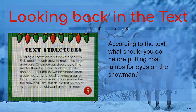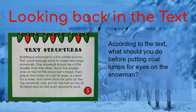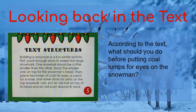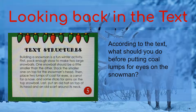My question says: according to the text — which means your answer is in the text, so we need to go back and look — what should you do before putting coal lumps on for the eyes of the snowman? Right here it says 'place two lumps of coal for the eyes,' and the question asks 'before.' So I'm going to backtrack to the sentence before it: 'Stack the smaller one on top for the snowman's head. Then place two lumps of coal for the eyes.' So the thing I do before putting coal for eyes is putting the smaller snowball on top to make the snowman's head.